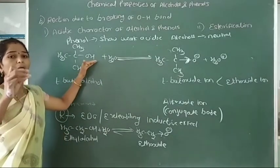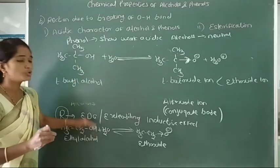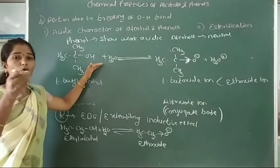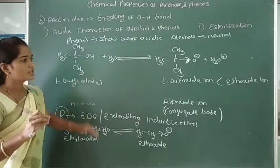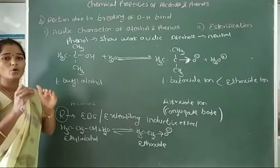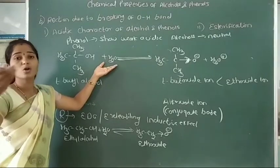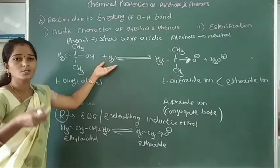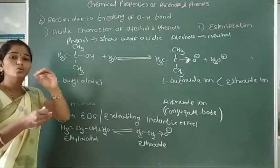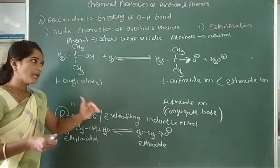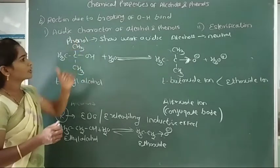Alcohols do not ionize much in water molecules. They show neutral character in aqueous medium. This is because the electron-donating alkyl group attached to the oxygen atom destabilizes the alkoxide ion. This is the first point of the acidic character of alcohols.